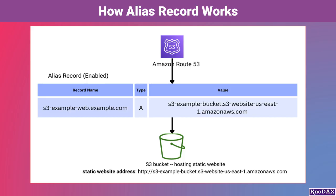This S3 bucket is hosting a static website, making it accessible through the custom domain name s3-example-web.example.com. ALIAS records are especially useful because they integrate seamlessly with AWS services such as S3, Elastic Load Balancers, and CloudFront. They also provide features like health checks and are free of charge when used with AWS resources. Users can access the S3-hosted website by entering s3-example-web.example.com, with Route 53 handling the routing behind the scenes.